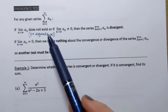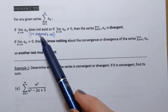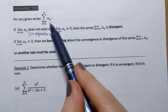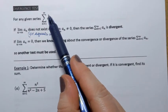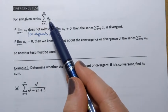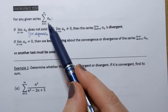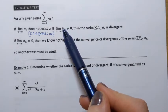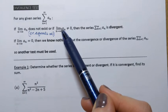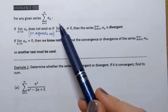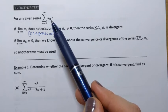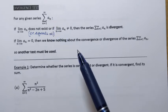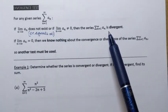Think of it this way: if the limit equals infinity, it means that terms of that sequence are getting infinitely large. And if we keep adding numbers that are growing bigger and bigger, then it makes sense that the sum is going to be infinity. Or if the terms of the sequence approach some non-zero number, like five, we'll be adding the same thing over and over, so the sum will also be infinity. In all those cases the series is divergent.